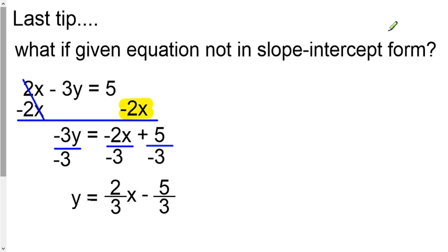So y would equal, because it's negative negative right here, it would become positive 2/3x. Over here, what's a positive 5 divided by negative 3? You can't really simplify that without going into decimals, so we would just let that sit at negative 5/3. But that's how you can go get your rate of change. If they don't give you a slope-intercept form equation, you can just go put it in to that.